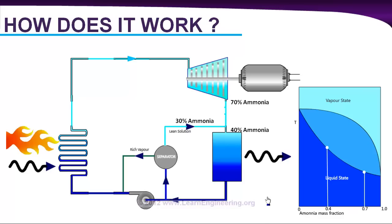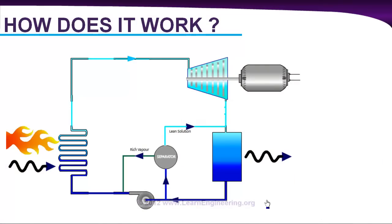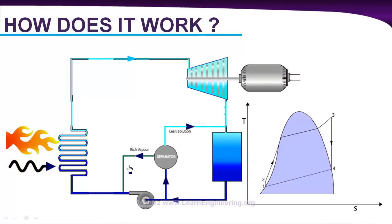If you check temperature entropy diagram of a Kalina cycle carefully, you can notice one thing over there. Temperature at exit of steam turbine is much higher than temperature at inlet of condenser, or temperature at point 4 is much higher than temperature at point 2. You can see it over here.